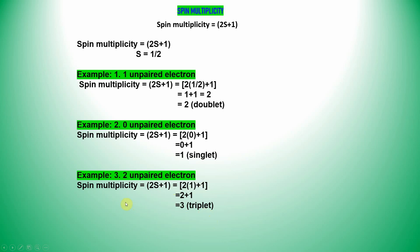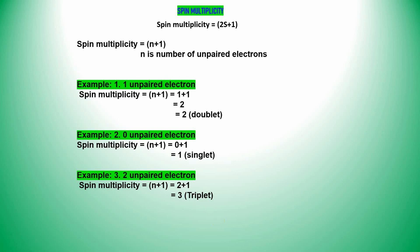Likewise, if you have 3 electrons, 4 electrons, or 5 electrons, just substitute into this formula and you will get your spin multiplicity. This is one method. There is another type of calculation: you can use the N plus 1 method, and you will also get your spin multiplicity.